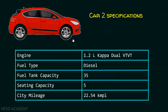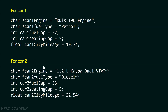I also have a second car with its own specifications: engine is 1.2 liter Kappa Dual VTVT, fuel type is diesel, fuel tank capacity is 35, sitting capacity is 5, and city mileage is 22.54 km per litre. To store all this information, I will do the same task again — this time with car2 variables. But think about it: is it a good idea to store all this information in separate variables? Suppose we have 100 cars — then storing all that information in different variables is actually time-consuming as well as memory-consuming. Therefore, this is not a good idea at all.